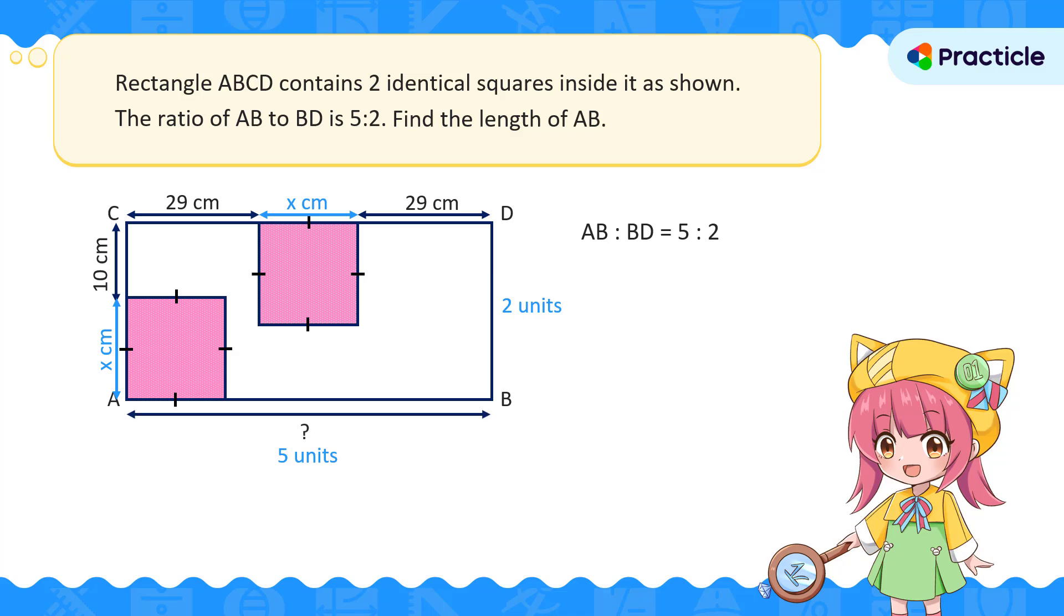AB is the length of rectangle ABCD. It is the same as CD. How long is CD? 29 plus x plus another 29 cm. This can be simplified to 58 plus x cm.